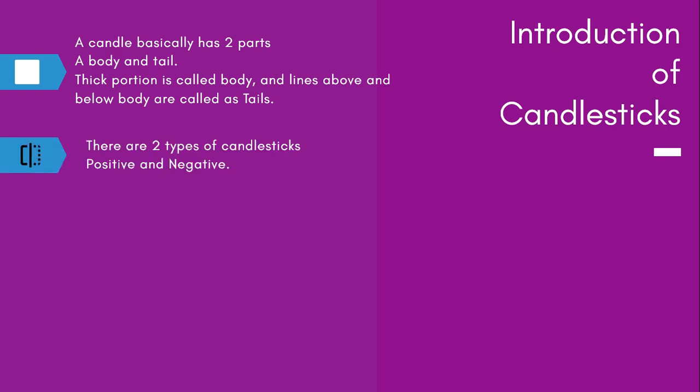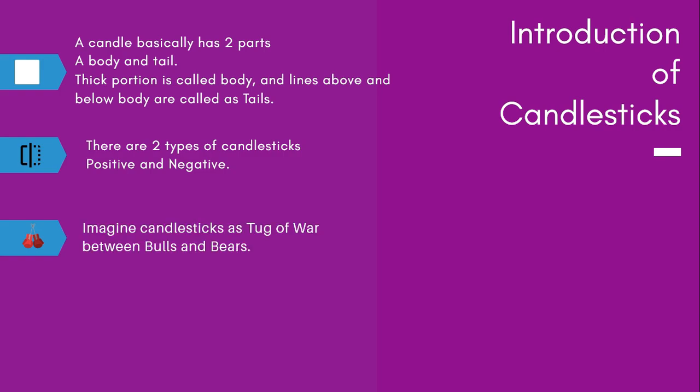There are two types of candlestick: a positive candle and a negative candle. A positive candle tells you that the market was positive or the stock went up; the negative candle is the reverse, indicating that on that particular time frame the price went down. To remember candlesticks better, we visualize them as a tug of war between buyers and sellers — bulls are trying to push the price up and bears are trying to push the price down.